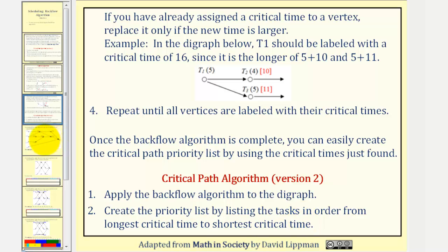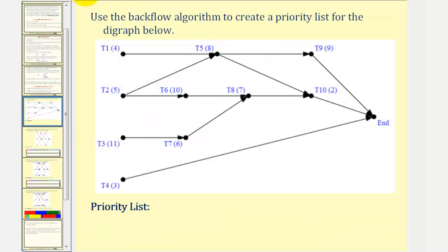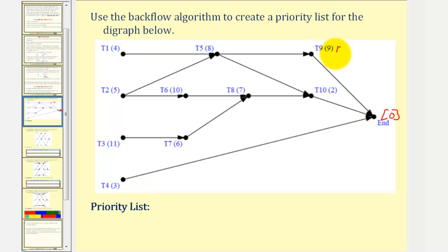Let's take a look at our example. First step: label the end with a critical time of zero hours. Notice tasks nine, ten, and four lead to the end. Therefore task nine would have a critical time of nine hours, task ten would have a critical time of two hours, and task four would have a critical time of three hours.